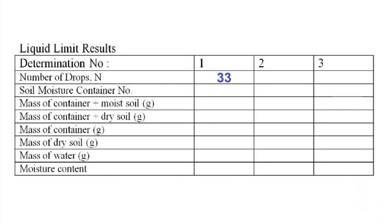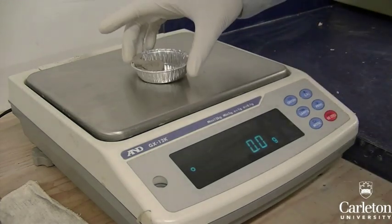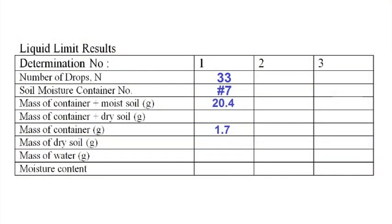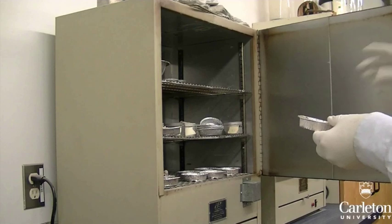To do this, take a moisture container and identify it with a number. Then record the mass of the empty container. Place a small amount of the sample in the container and record its mass. Place the sample in an oven for 24 hours to dry.